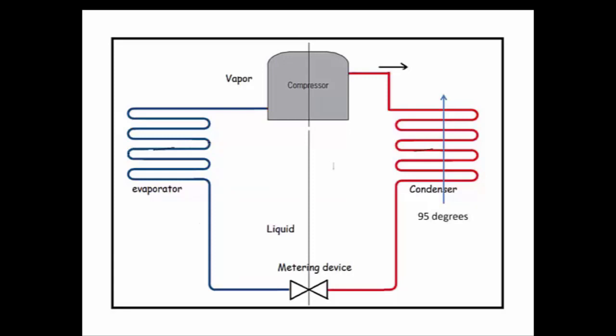Using the subcooling method should only be done on systems with a TXV valve before the evaporator. With TXV systems, the metering device works to keep the proper amount of refrigerant in the evaporator at all times and a reasonably constant superheat.